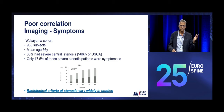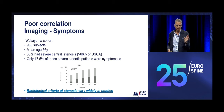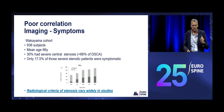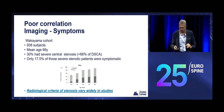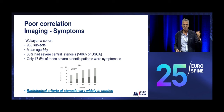We know there is a poor correlation between images and symptoms. The Wakayama cohort in Japan showed that very well — they found that in an elderly population, 30% have severe stenosis and only 20% of those 30% are symptomatic. Their stenosis was measured as a proportion of the dural sac cross-sectional area, with severe stenosis defined as two-thirds of the surface. Radiological criteria of stenosis vary, so we're comparing apples and pears in those studies.